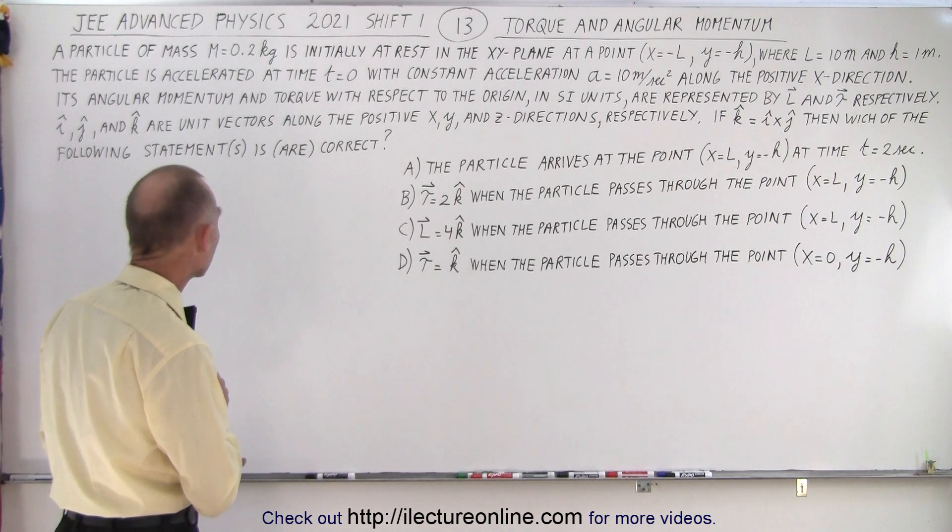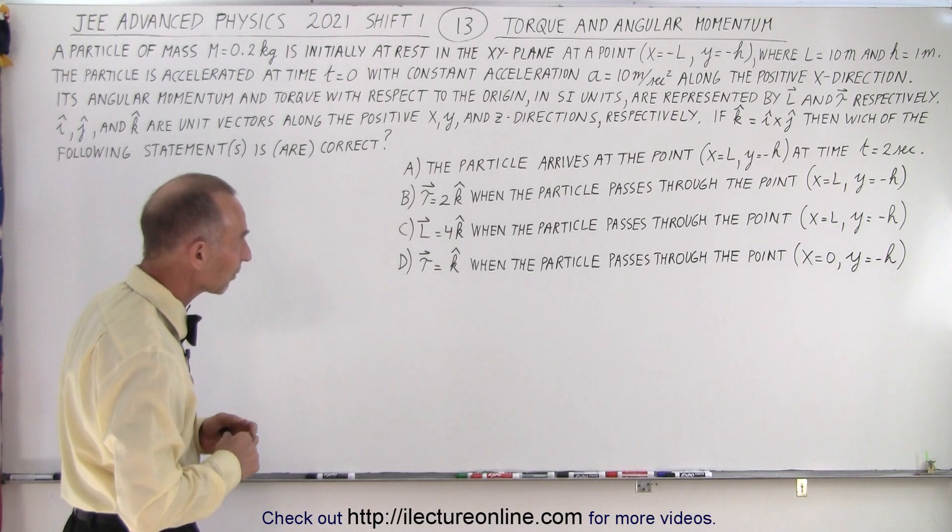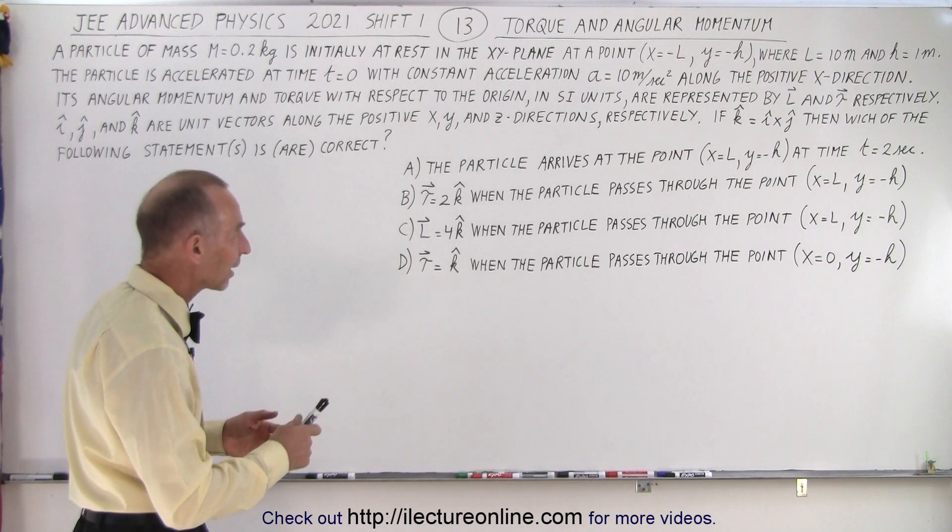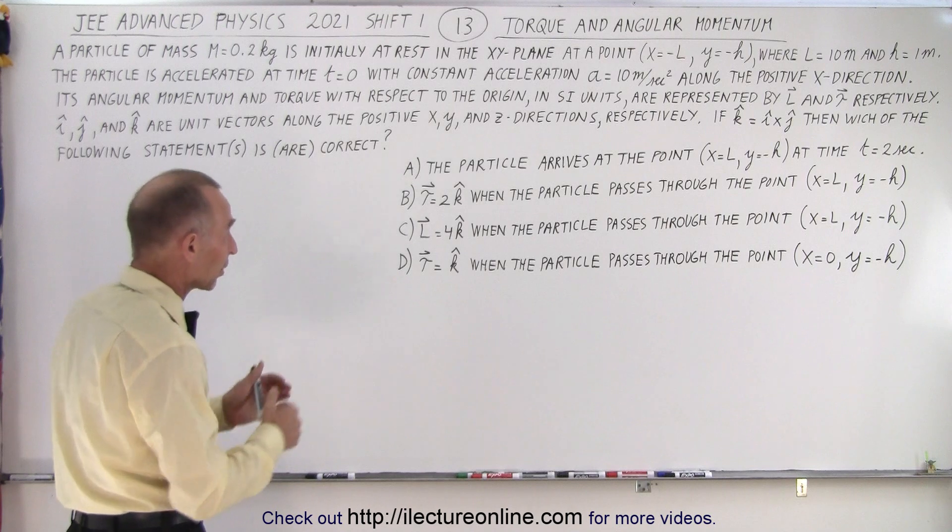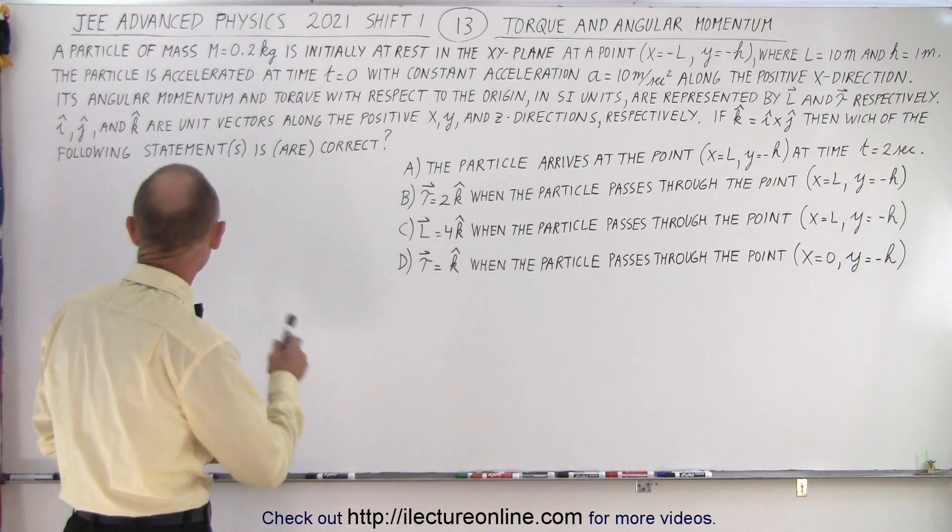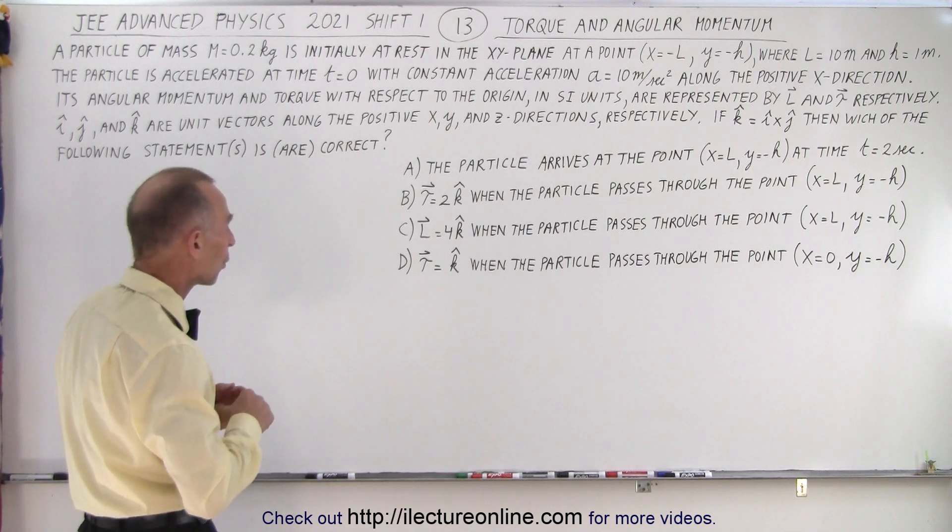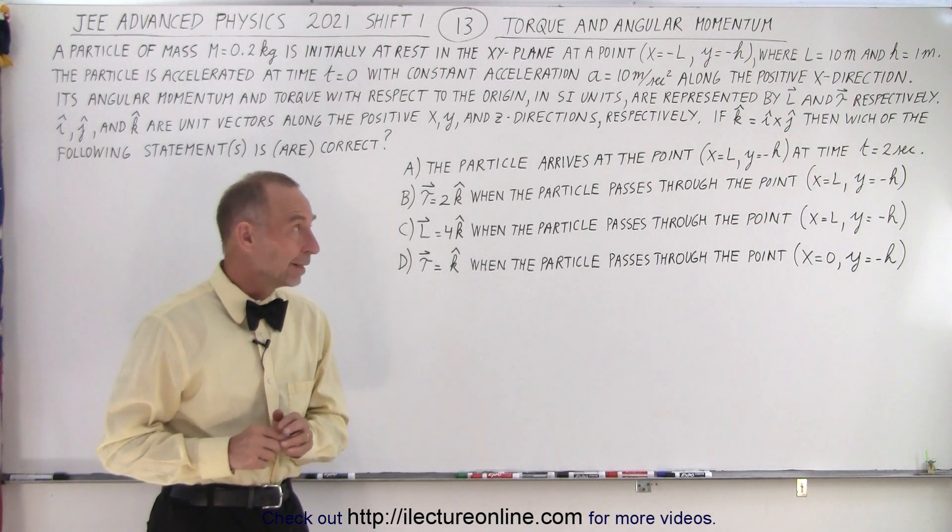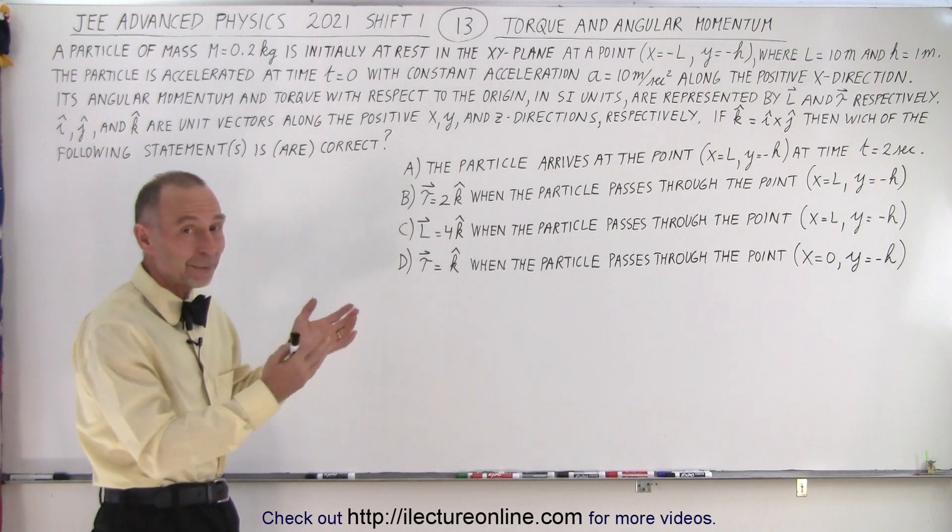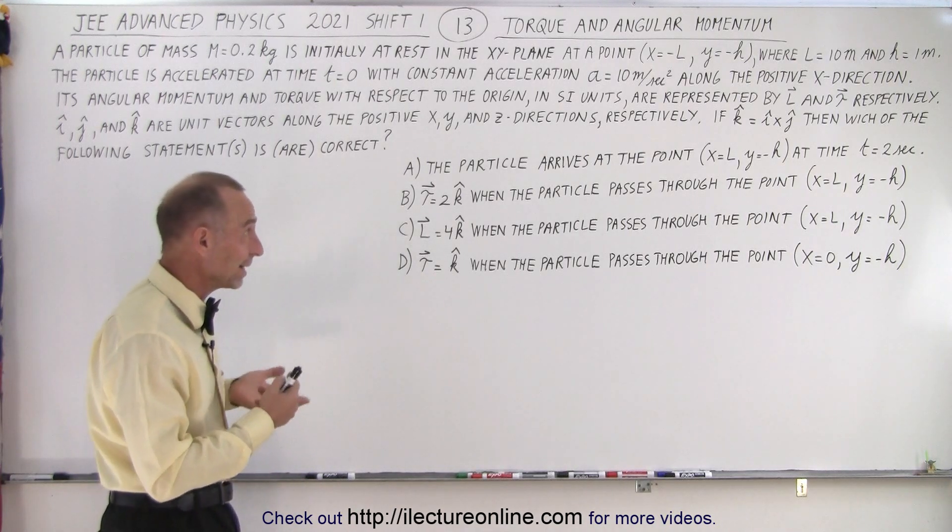i, j, and k are unit vectors along the positive x, y, and z directions respectively, and if k equals i cross j, which means that x, y, and z axis are in the normal directions we're used to, then which of the following statements are correct. So again we get four statements and we need to figure out if these are correct.